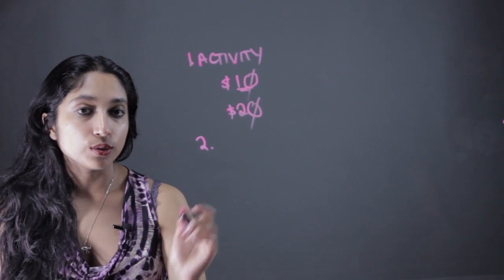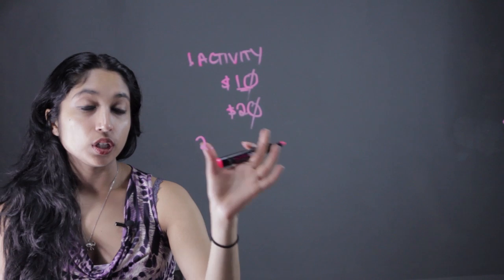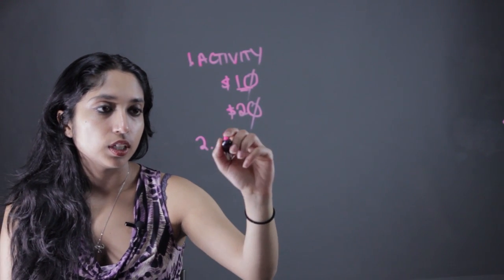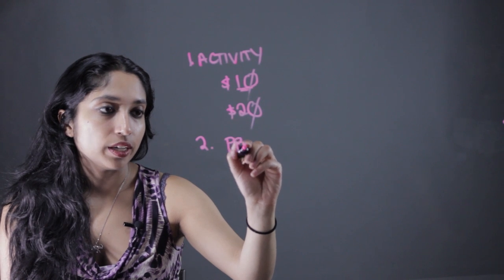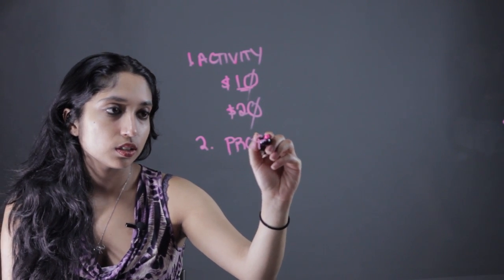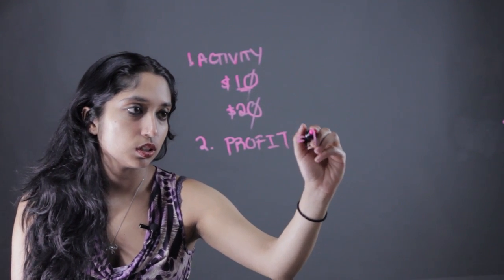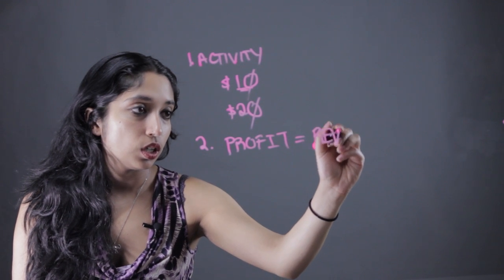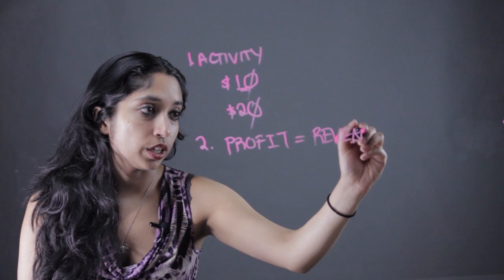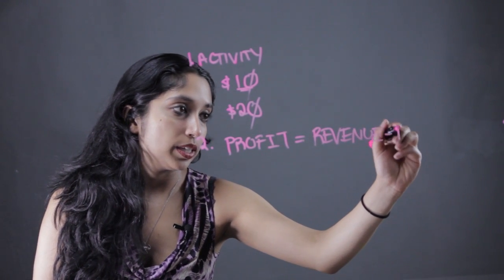The second thing you want to do is take that activity and turn it into a concrete formula. You can write that as profit equals revenue—the price you're charging, the money you're getting from it—minus expenses.